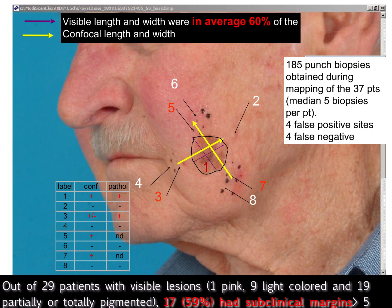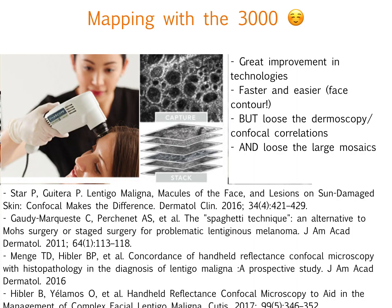We had very good correlation. Now that we have the 3000 head of the microscope that can move freely, it has been a great improvement for mapping. It's faster, it's easier, and we can really assess the face contour and the nose, but we lose our dermoscopy-confocal correlation and we lose the large mosaic.